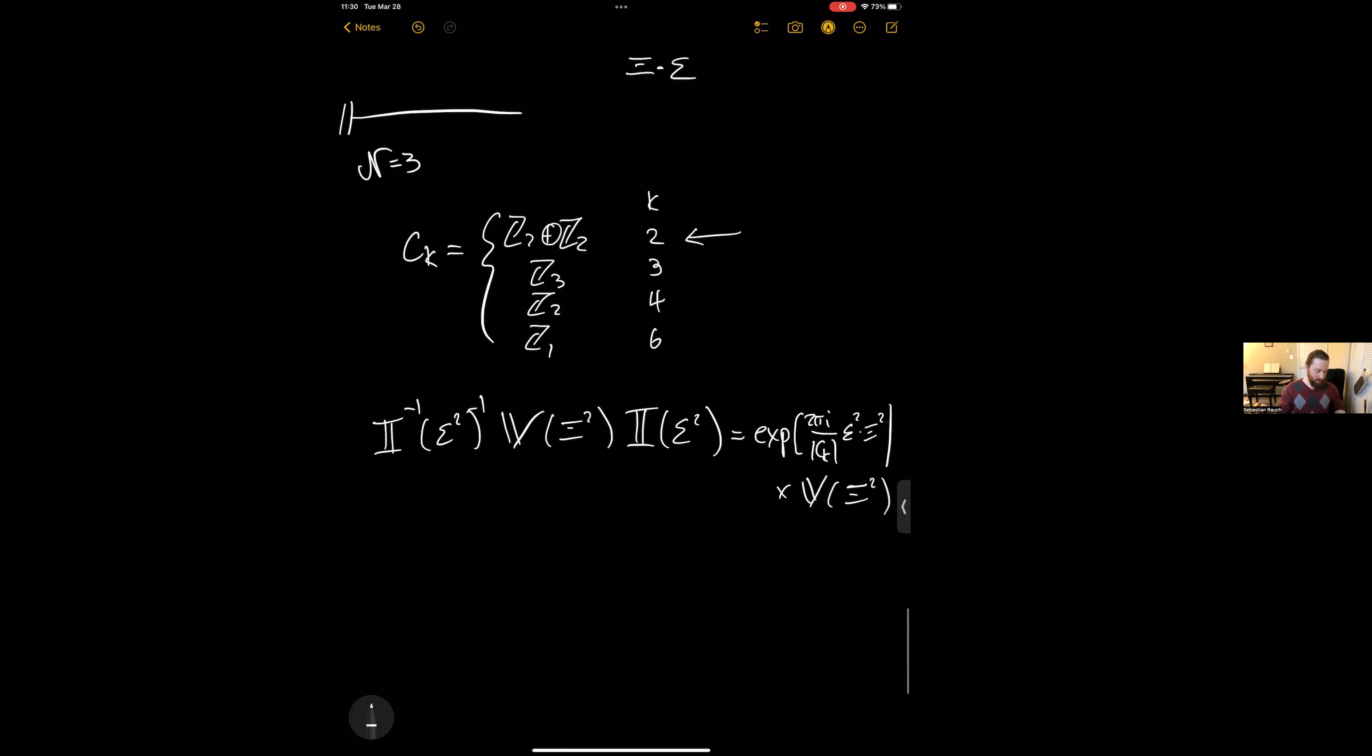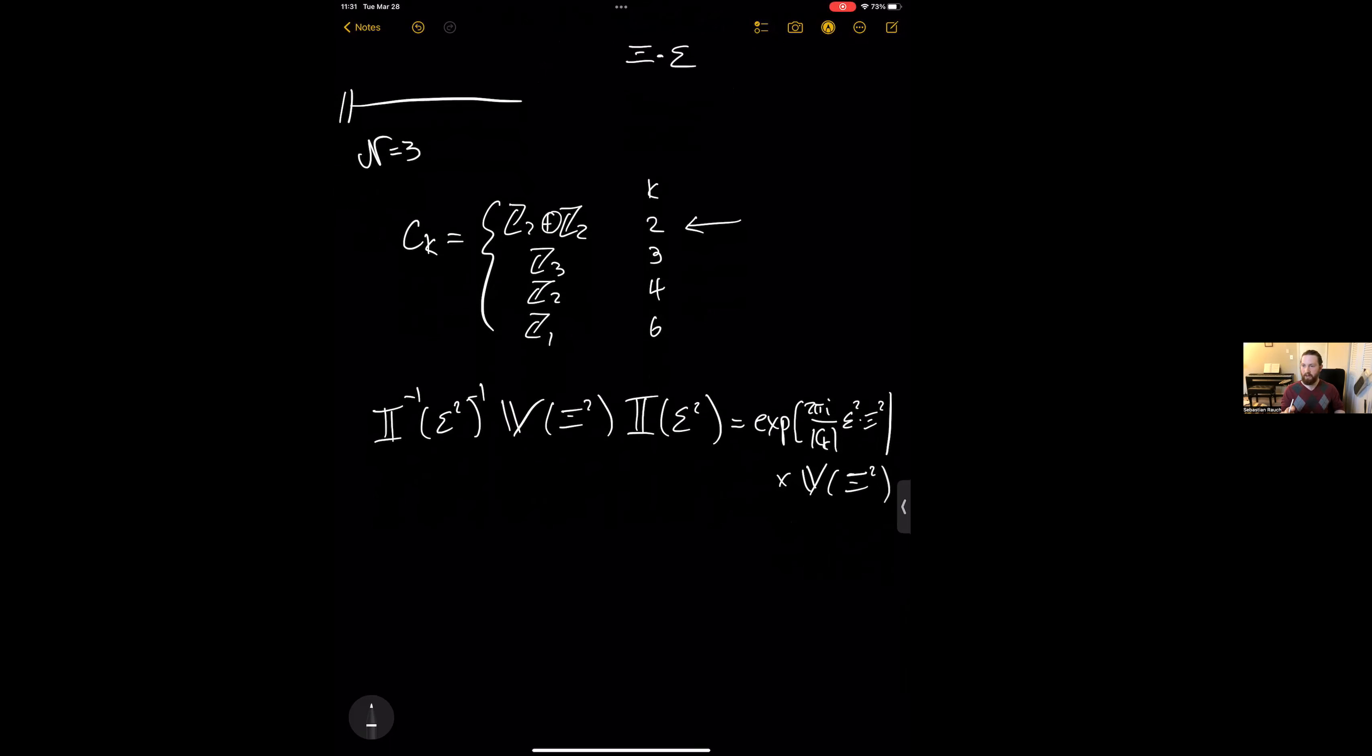And then of course in this case there are no string string commutation relations or five brane five brane commutation relations because you can't split the doublets.